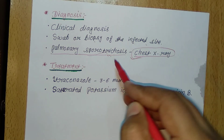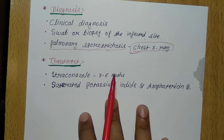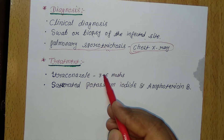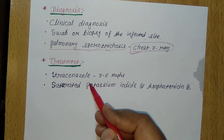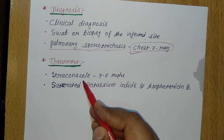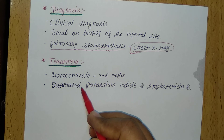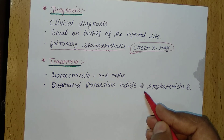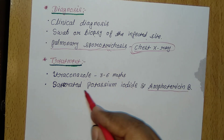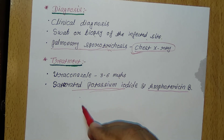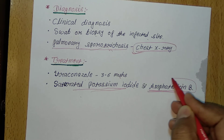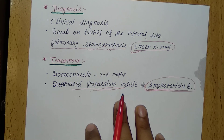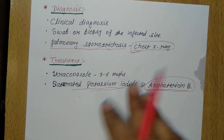For treatment of Sporotrichosis, we can give itraconazole for 3 to 6 months. We can also give saturated potassium iodide. Amphotericin B is given in severe cases of Sporotrichosis. I hope you liked the video — thank you so much for listening.